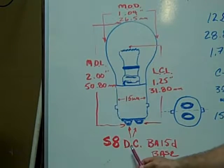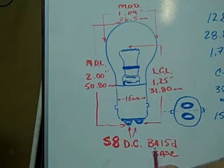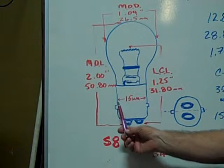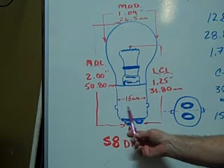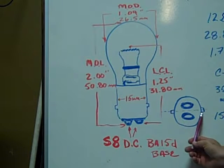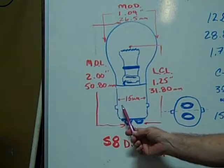The S8 DC or dual contact BA-15D base miniature bulb has a base diameter of 15 millimeters and the pins are 180 degrees from each other on either side of the base.